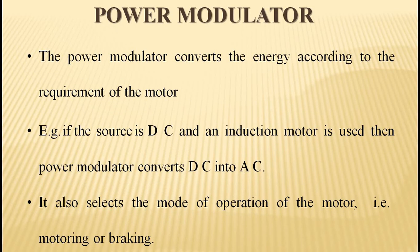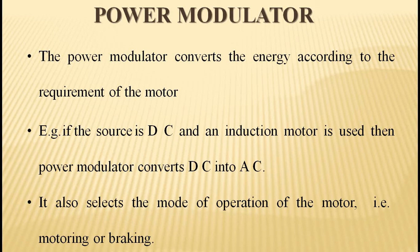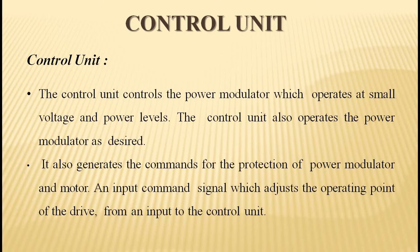The power modulator restricts the source and motor current to prevent overloading or voltage drop. It also converts energy according to the requirement of the motor — for example, if the source is DC and an induction motor is used, the power modulator converts DC into AC. It also selects the mode of operation of the motor, like motoring or braking.